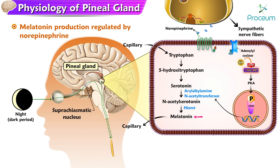Melatonin is the N-acetylated product of serotonin. The synthesis of melatonin is initiated by the conversion of tryptophan to serotonin, which is then converted to melatonin by the action of the enzyme arylalkylamine N-acetyltransferase (AANAT).